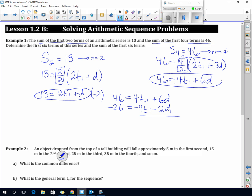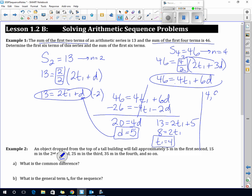That's important. Once I know that D is 5, I can sub it back into this equation right here, and I get 13 equals 2T1 plus 5. Move the 5 over, I get 8 equals 2T1, and T1 equals 4. Now that I know the first term and the difference, I can find the first 6 terms, which would be 4, 9, 14, 19, 24, 29. And if I add up the first 6 terms using the formula, I get 99.